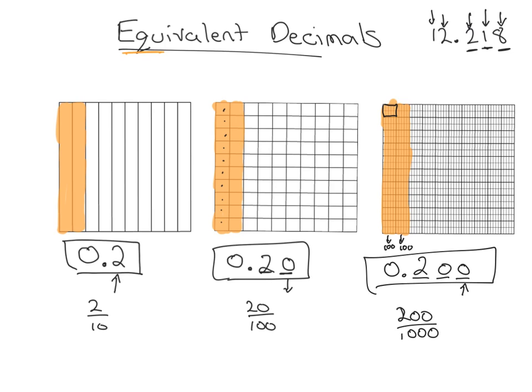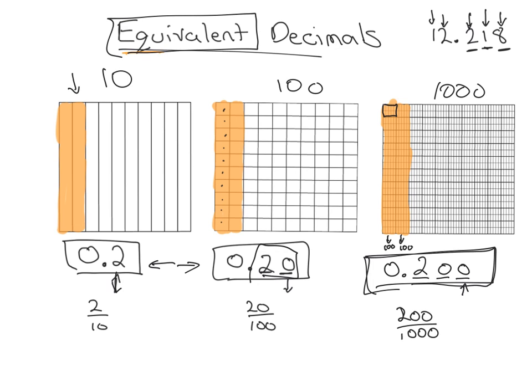So these are what we call equivalent decimals. Two tenths is equal to twenty hundredths, which is equal to two hundred thousandths. I would get the same amount of cake in each situation. The only difference is this one's cut up into ten pieces, this one's cut up into a hundred pieces, and this one is cut up into a thousand pieces. It is the same amount. Hopefully this helps. You can move on to the next activity.